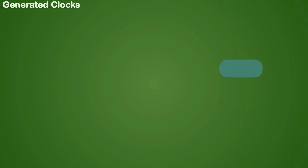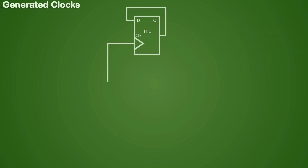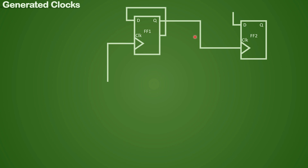Now let us understand generated clock. A generated clock is a clock which is derived from the master clock. A master clock is defined using the create_clock specification. When a new clock is generated in a design based on a master clock, the new clock can be defined as a generated clock. Here we have taken an example of a divide-by-two circuit for a clock. The output from the Q pin will be the divide-by-two frequency of the input, and one would define a generated clock at the output of this circuitry.